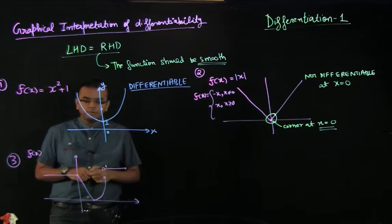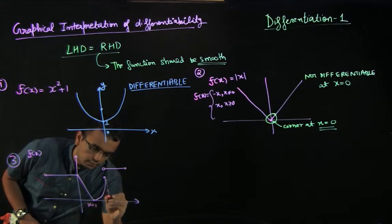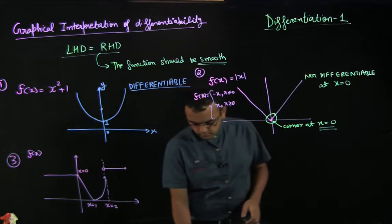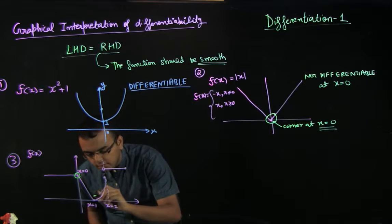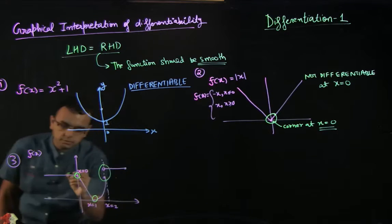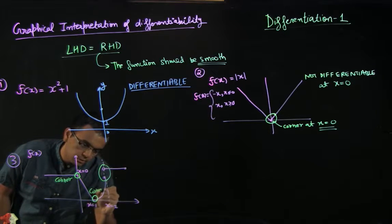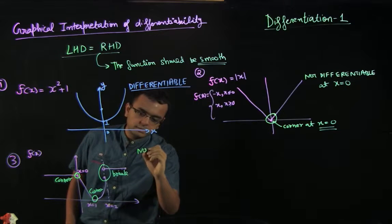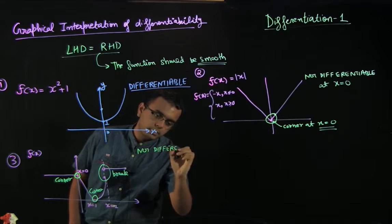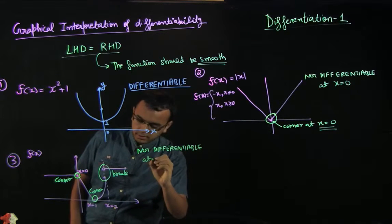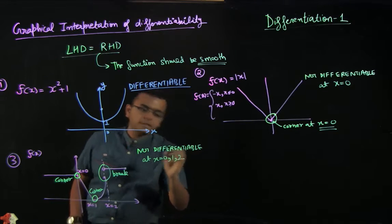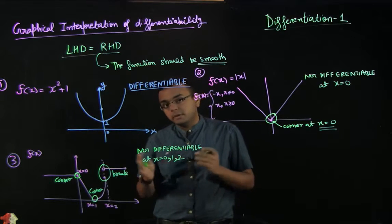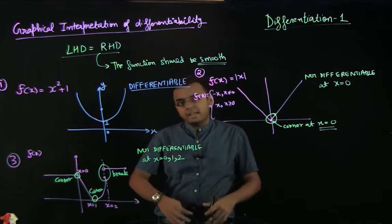Here x equal to 1, x equal to 2, and x equal to 0 are marked. You can spot that there is a corner here at x equal to 0, a corner at x equal to 1, and a break at x equal to 2. A corner means it is not differentiable, so it is not differentiable at x equal to 0 and x equal to 1. Because there is a break, it is also discontinuous and not differentiable at x equal to 2.